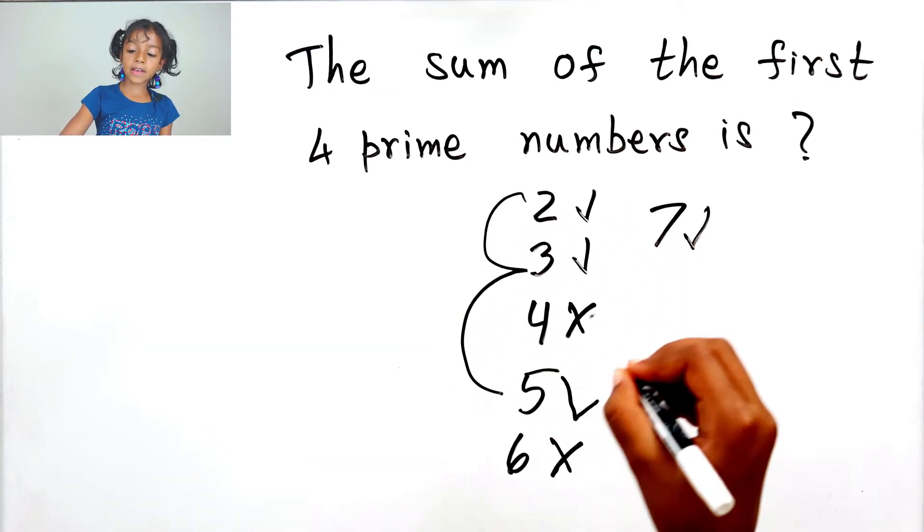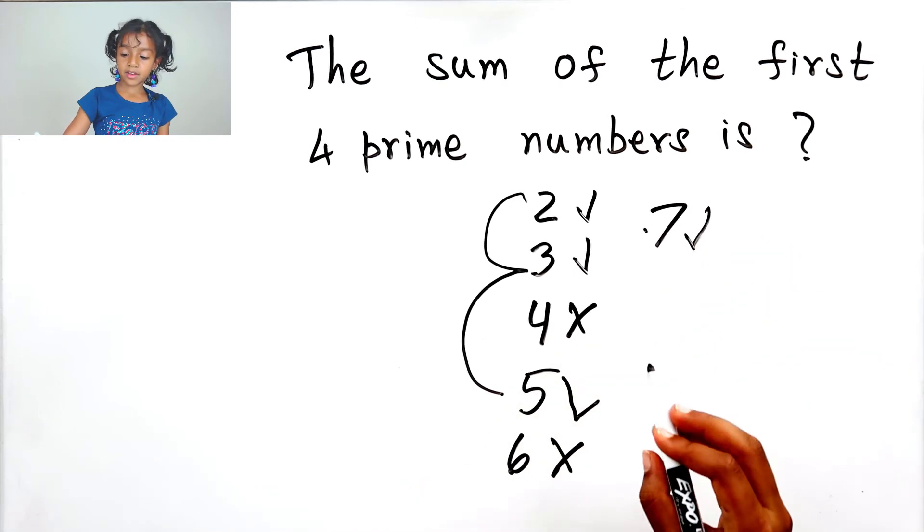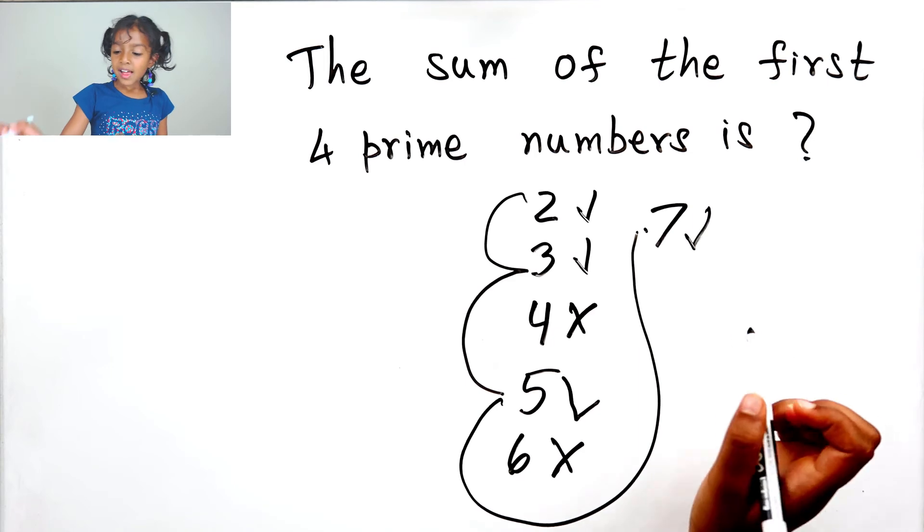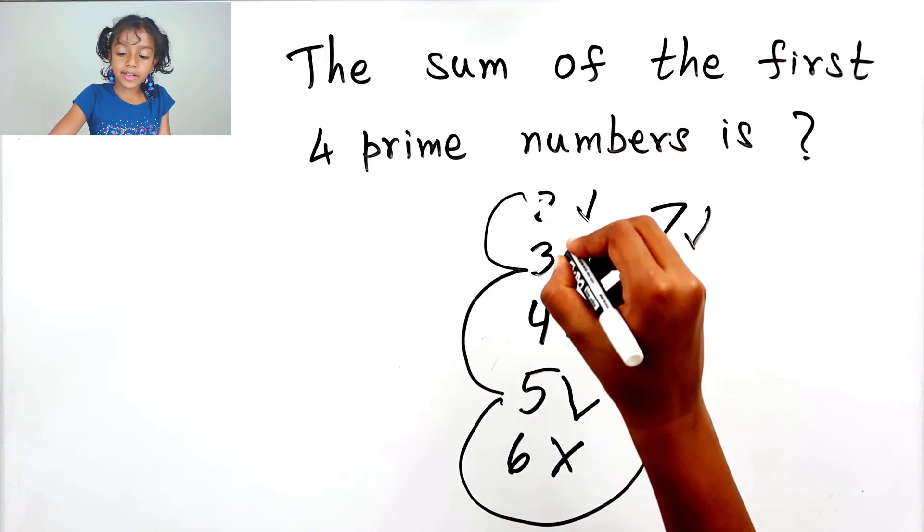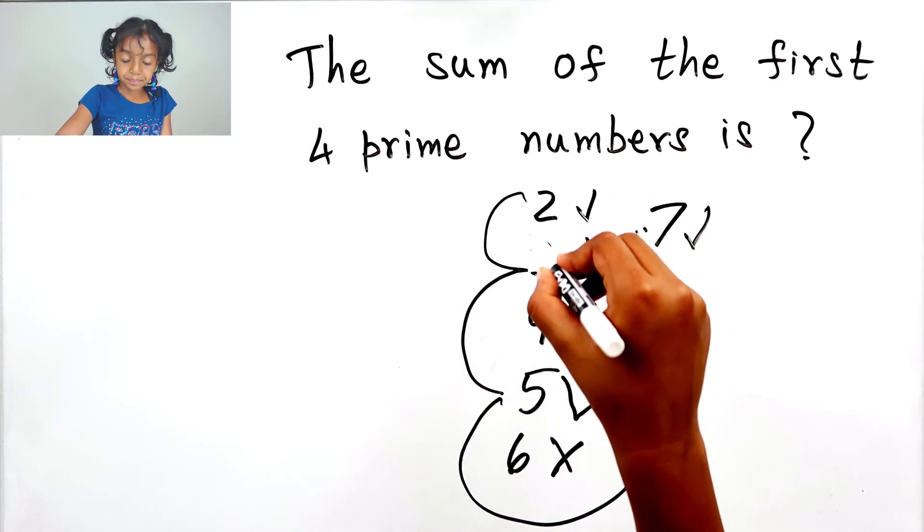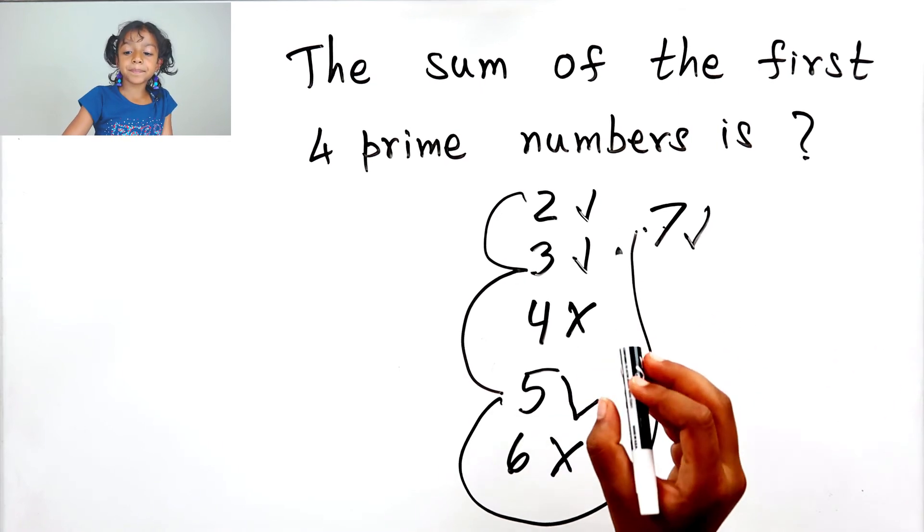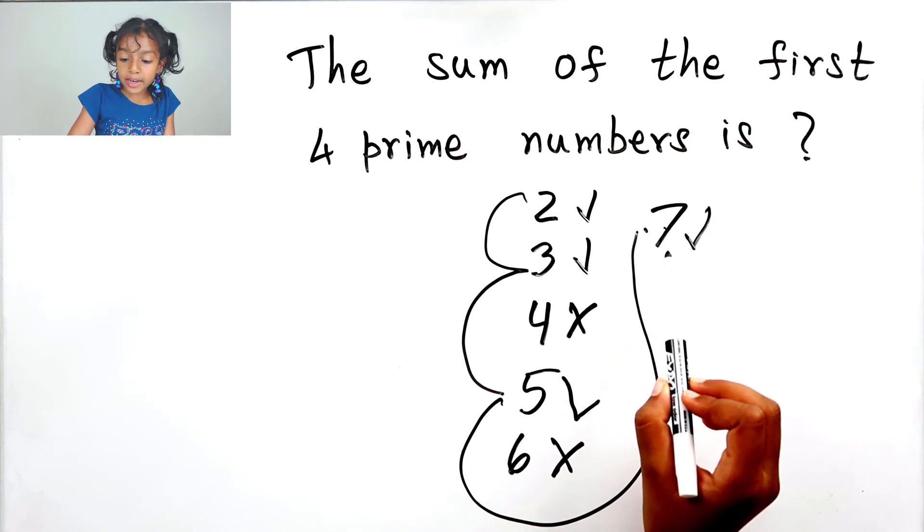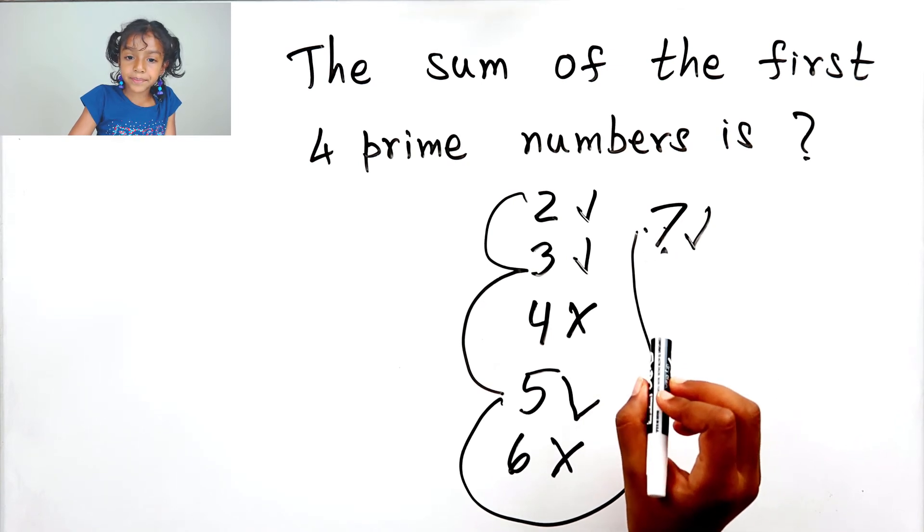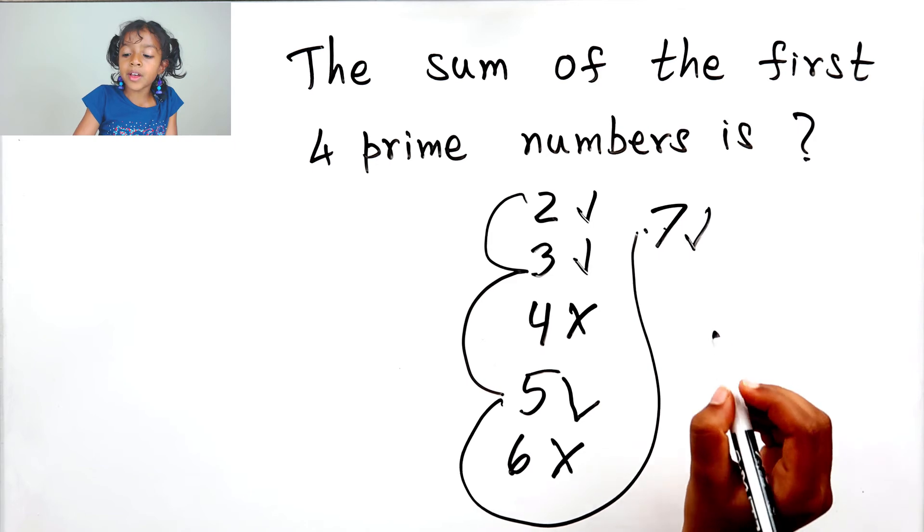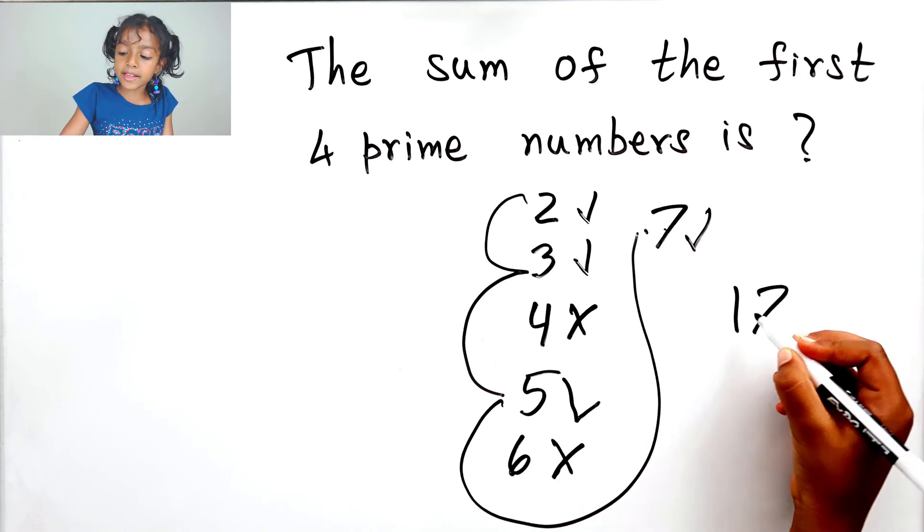Two and three and five and seven. So let's add these. Seven plus two equals nine, and nine plus three equals twelve, and twelve plus five equals seventeen. So the answer is seventeen.